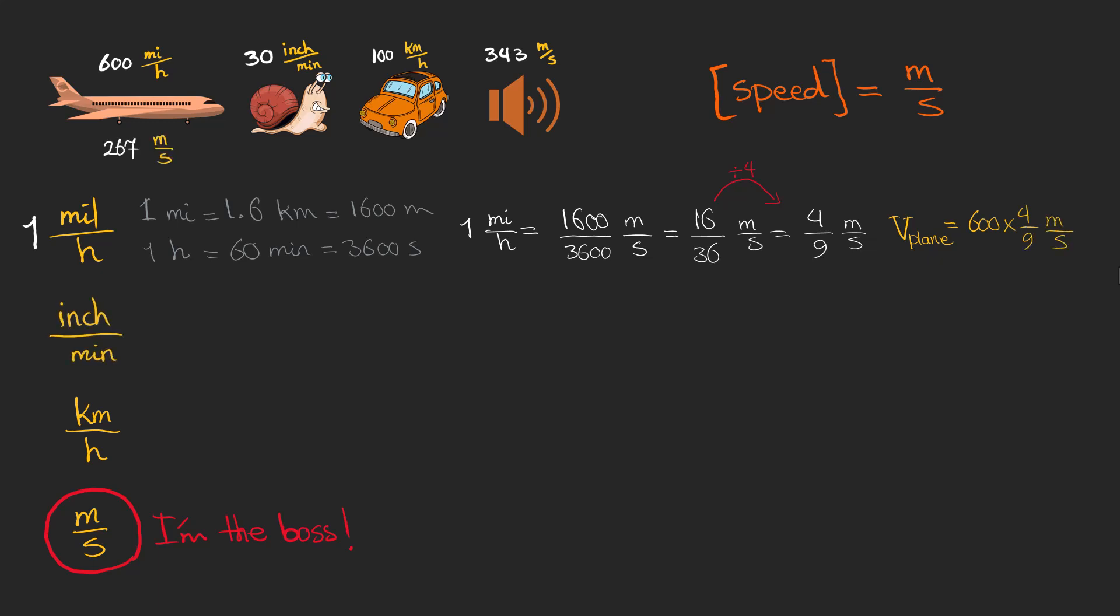Now let's move on to inch per minute. Every inch is 0.0254 meters. And it is because every centimeter is a hundredth of a meter, which can be easily expressed as 10 to the power of minus 2 meters. And every minute is 60 seconds.